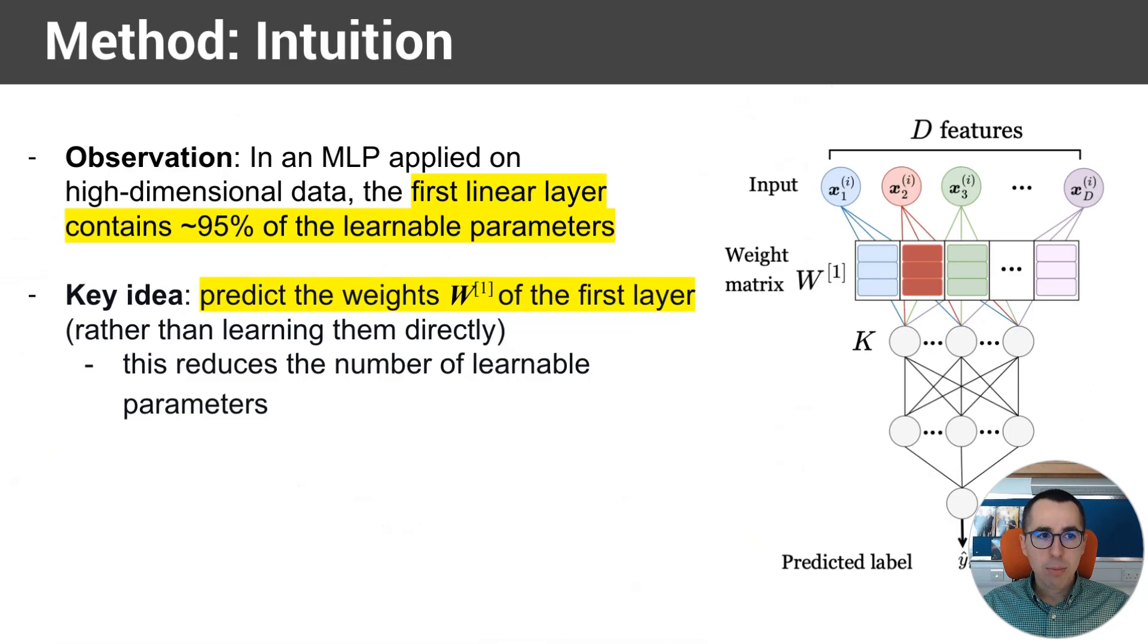I'll start by presenting the intuition of the method, and then I'll discuss the actual method. Now, we start from the observation that a standard feed-forward network, so on the right, we have an MLP, just a sequence of linear layers. And the observation is that on high-dimensional data, so the number of features is very large, most learnable parameters are part of the input layer.